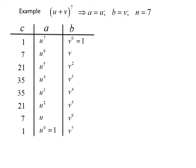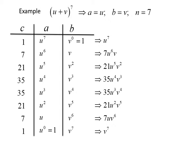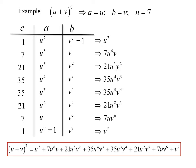We multiply across each row to get the terms of our polynomial: u to the seventh, 7u to the sixth times v, 21u to the fifth times v squared, 35u to the fourth times v cubed, 35u cubed times v to the fourth, 21u squared times v to the fifth, 7u times v to the sixth, and v to the seventh. So (u + v) to the seventh equals u to the seventh plus 7u to the sixth v plus 21u to the fifth v squared plus 35u to the fourth v cubed plus 35u cubed v to the fourth plus 21u squared v to the fifth plus 7uv to the sixth plus v to the seventh.